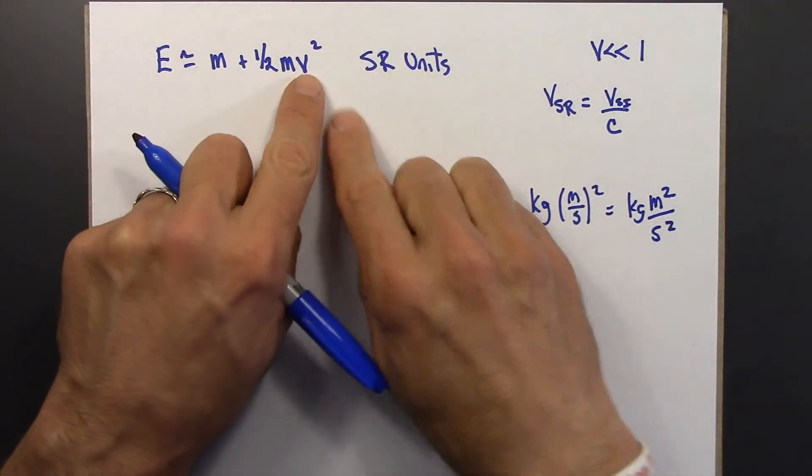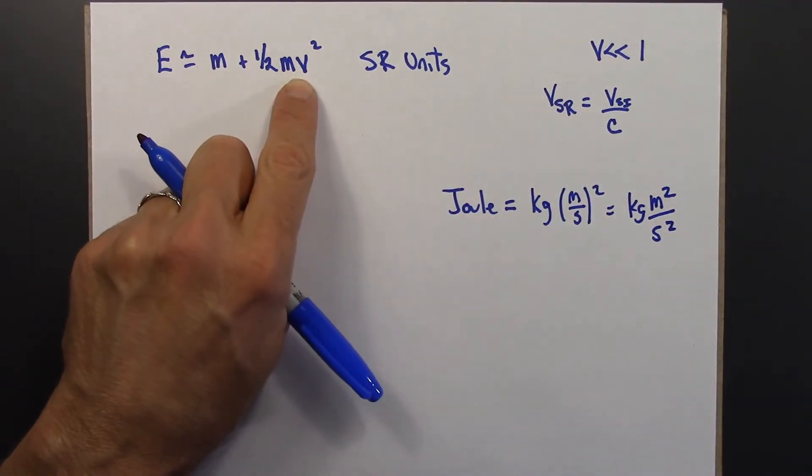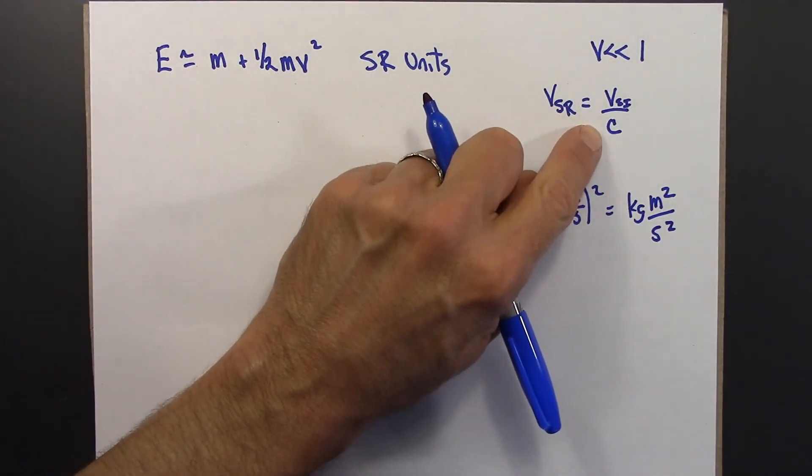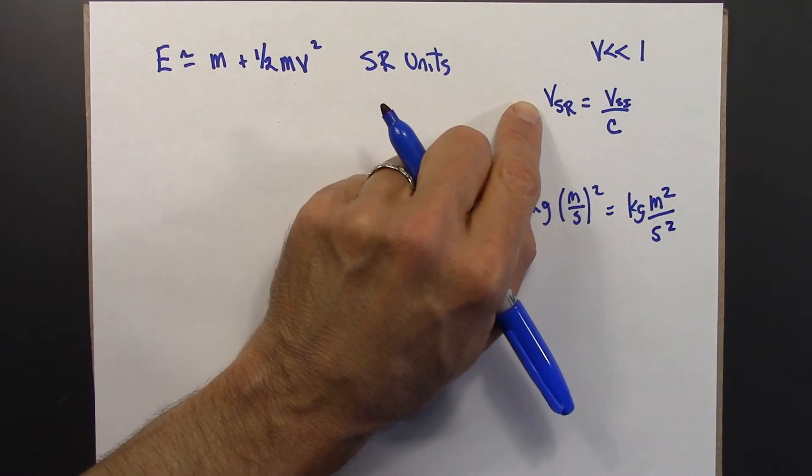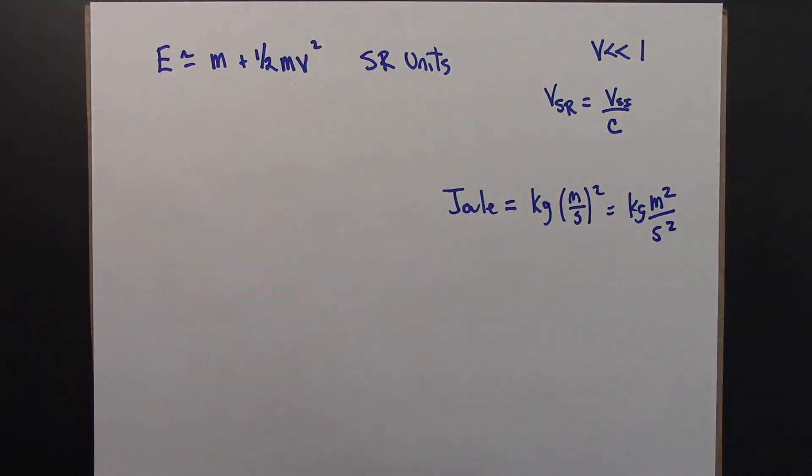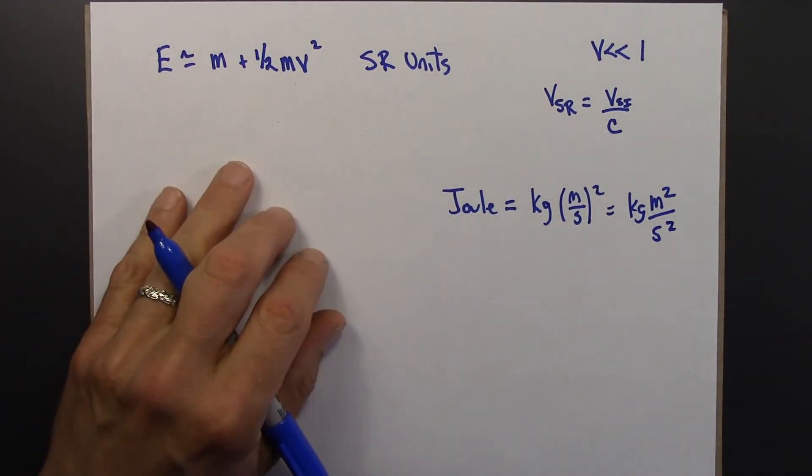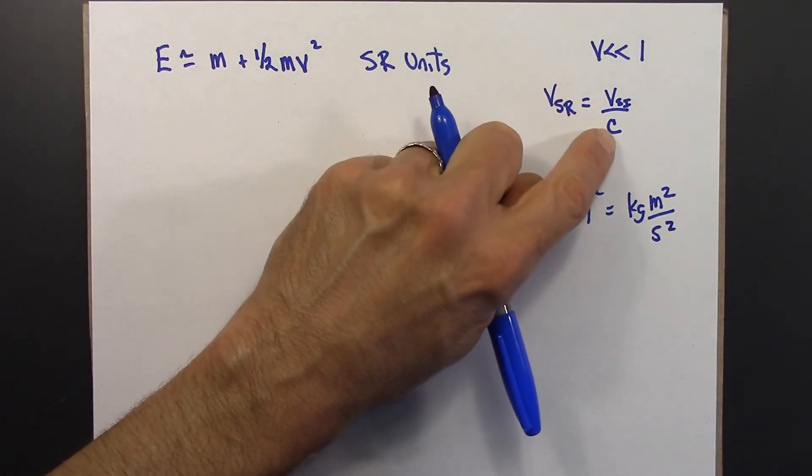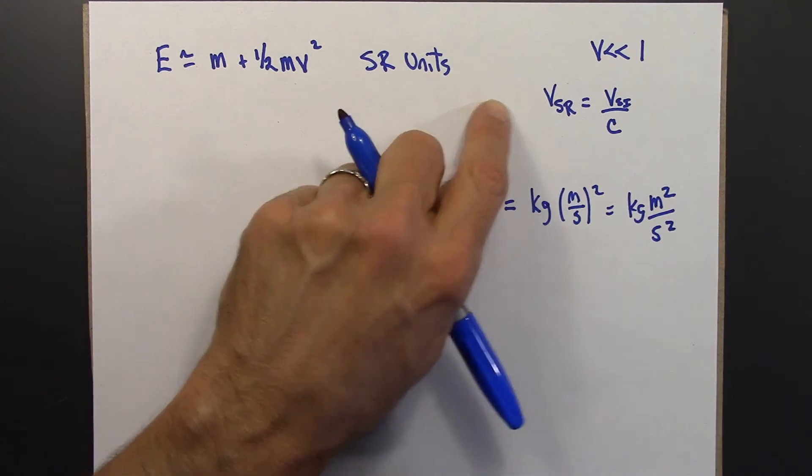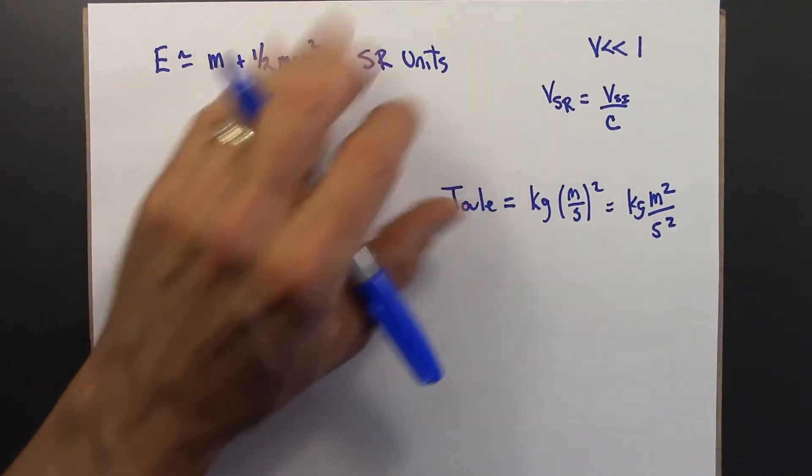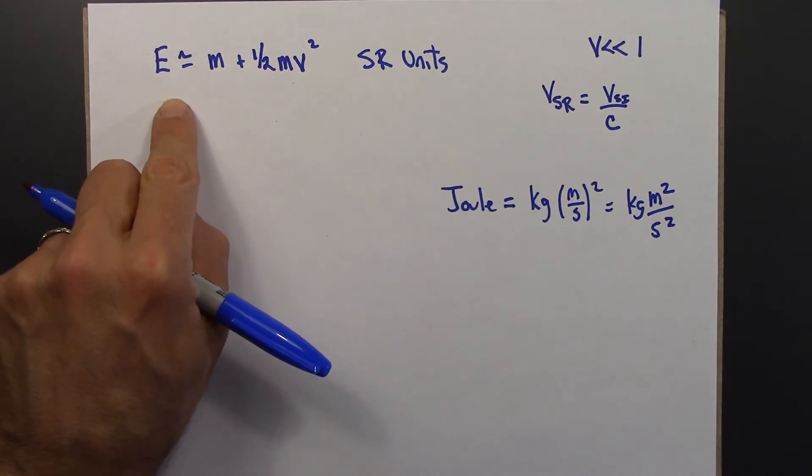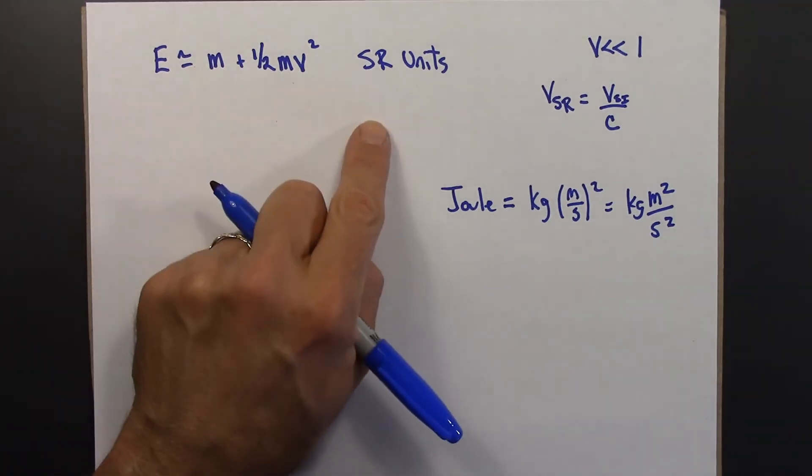And so if you have V in SR units, and you want to convert back to SI, you would need to multiply by C, by the speed of light. If Beowulf is traveling at 0.5, what is that in non-relativistic units? Well, it's the speed of light times 0.5. So you multiply by the speed of light.